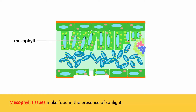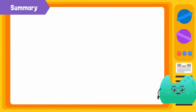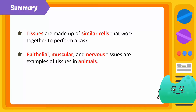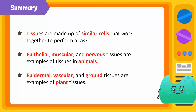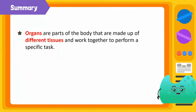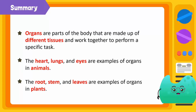So, leaves make food for plants. Cells combine to make up tissues and tissues combine to make up organs. Let's summarize what we have learned today. Tissues are made up of similar cells that work together to perform a task. Epithelial, muscular, and nerve tissues are examples of animal tissues. Epidermal, vascular, and ground tissues are examples of plant tissues. Organs are parts of the body that are made up of different tissues that work together to perform a specific task. The heart, lungs, and eyes are examples of organs in animals, whereas roots, stems, and leaves are examples of organs in plants.